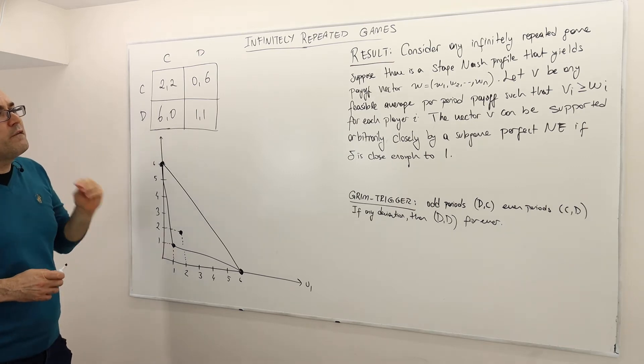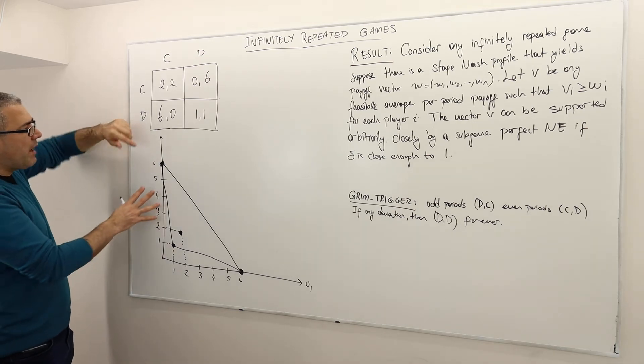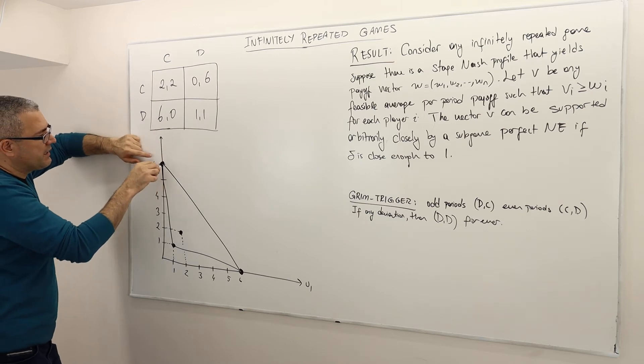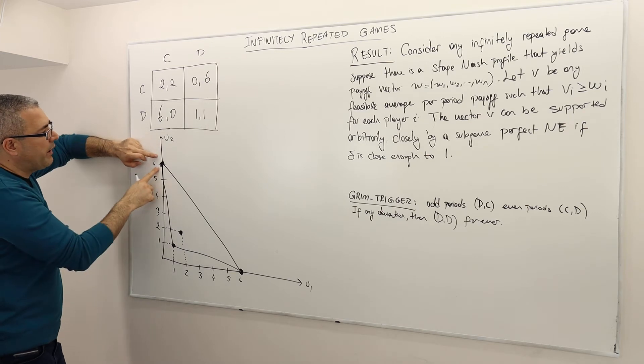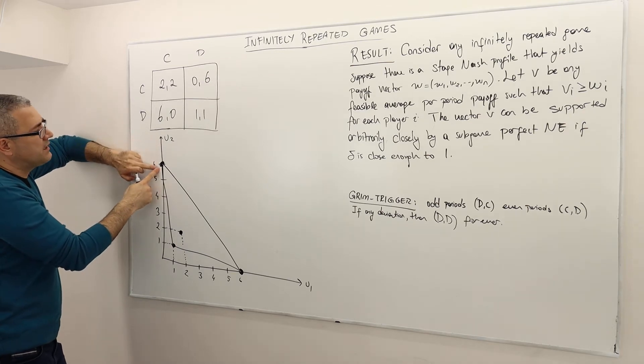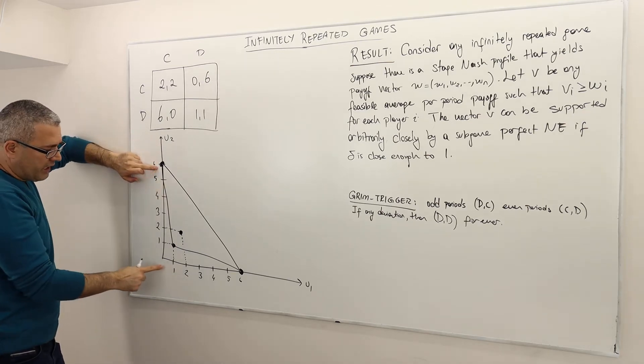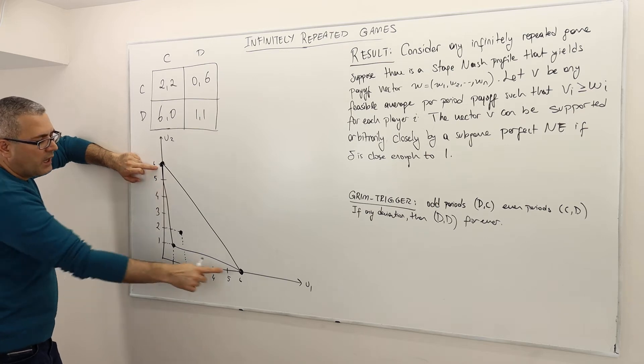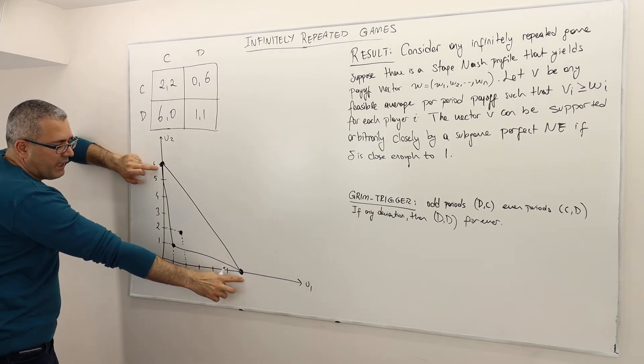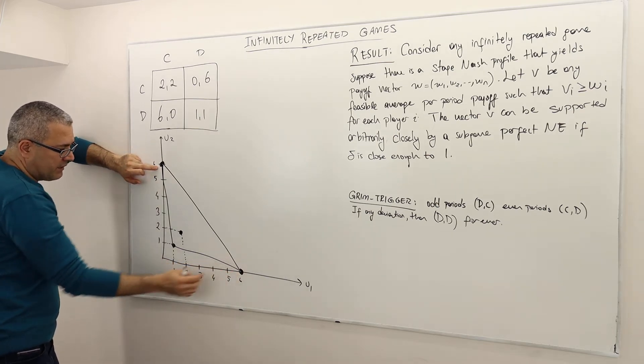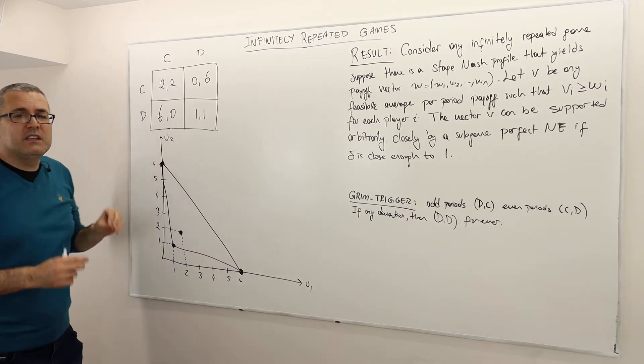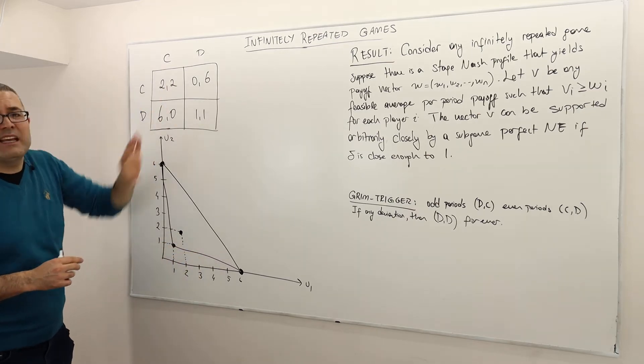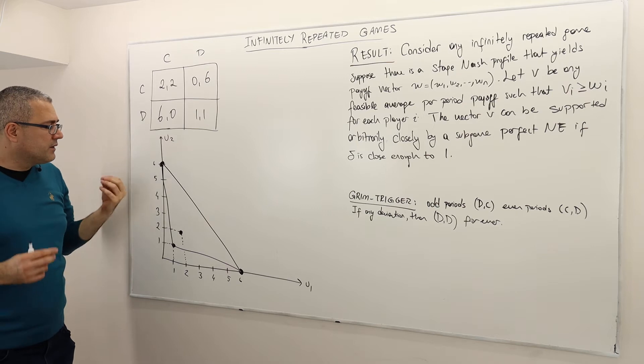So here, what is the set of feasible payoffs? Well, remember in this stage game, players can get - this is payoff of player 1, this is payoff of player 2. So player 2 can get at most 6 payoff, in which case player 1 is going to get 0, alright? And symmetrically, player 1 can get 6 payoff and player 2 gets 0. Player 1 and 2 get 0 and 0, and they can get 2 and 2.